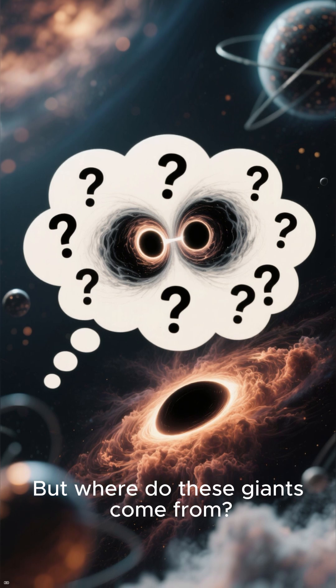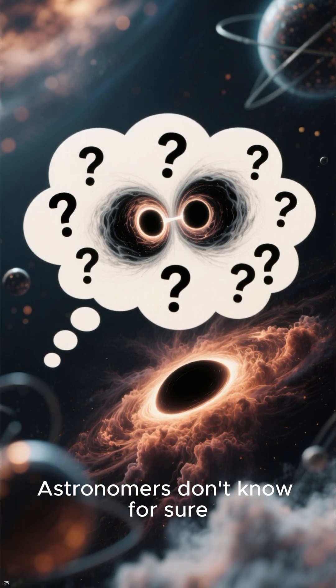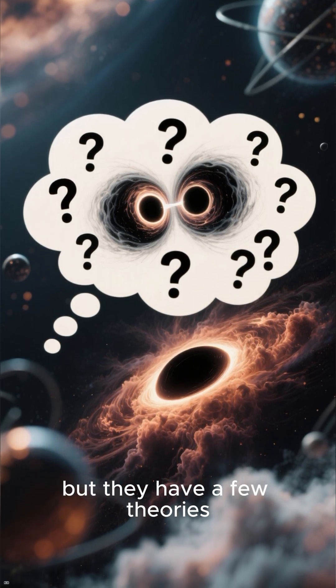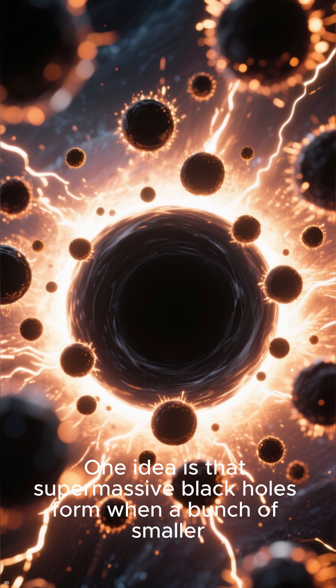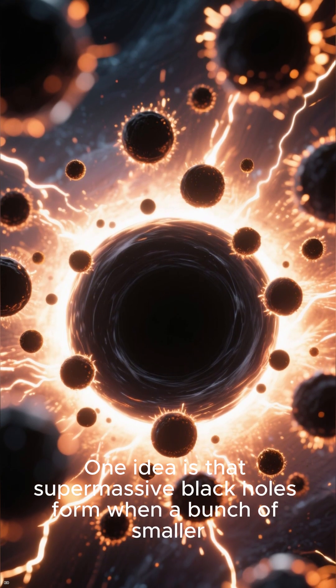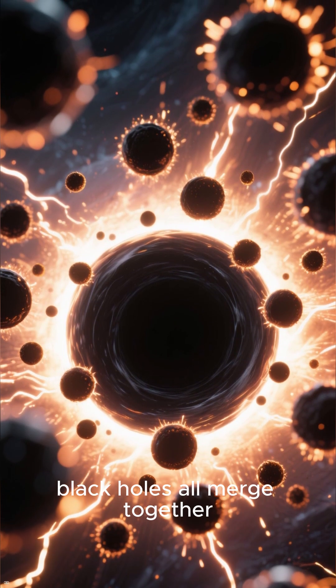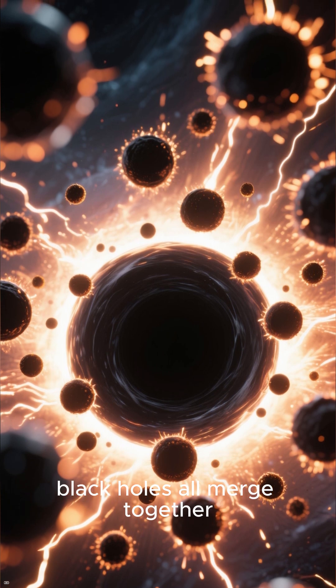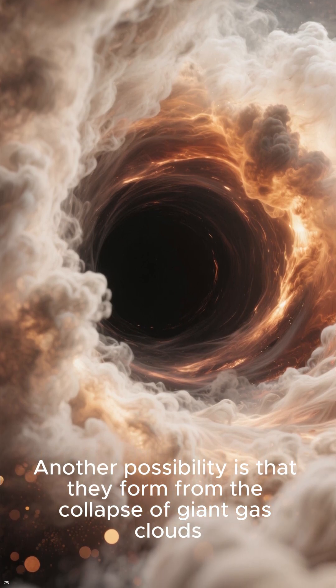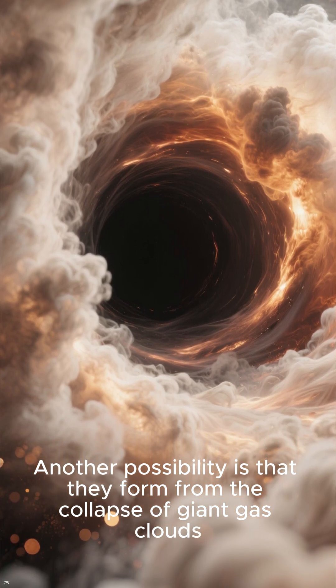But where do these giants come from? Astronomers don't know for sure, but they have a few theories. One idea is that supermassive black holes form when a bunch of smaller black holes all merge together. Another possibility is that they form from the collapse of giant gas clouds.